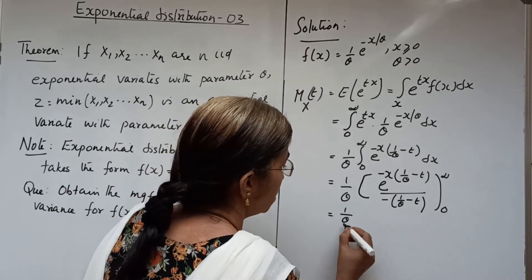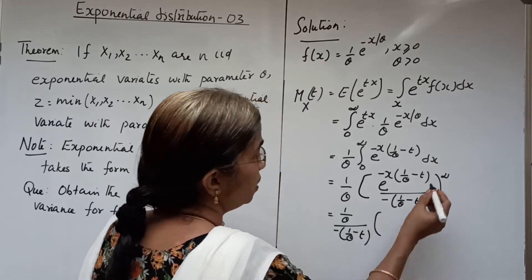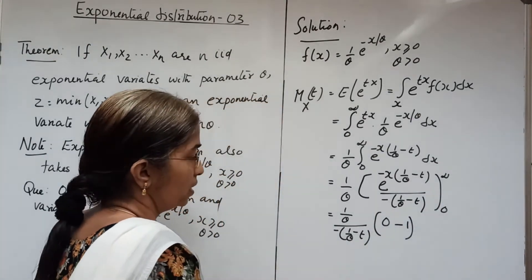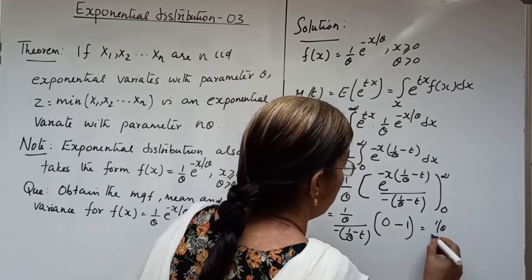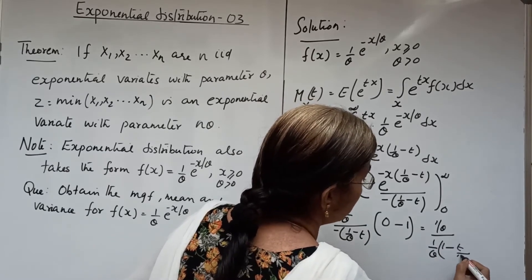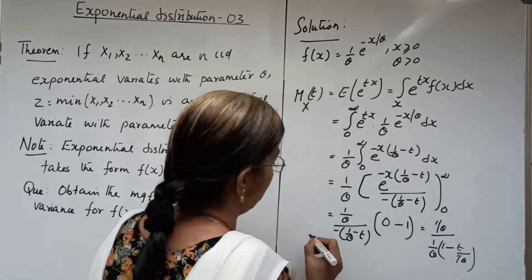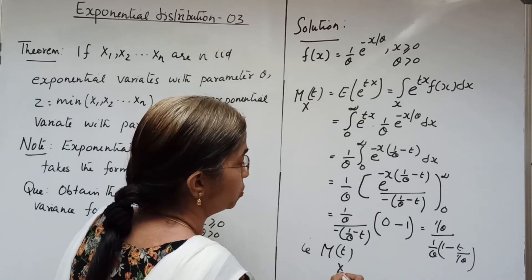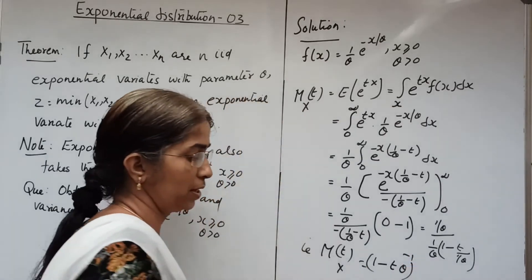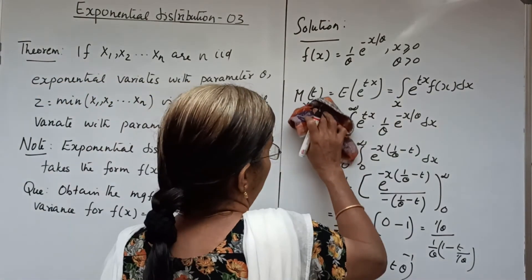This is equal to 1 by theta divided by minus of 1 by theta minus t, evaluated from 0 to infinity. Since e raised to minus infinity is 0 and e raised to 0 is 1, this gives 1 by theta divided by 1 by theta times 1 minus t theta. The 1 by theta cancels and we get m of tx equal to 1 minus t theta whole raised to minus 1.